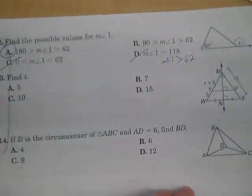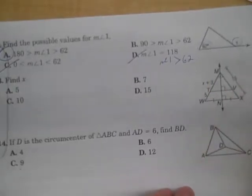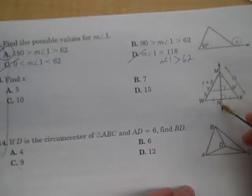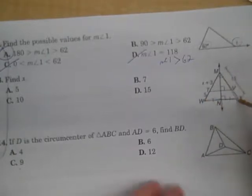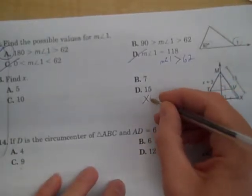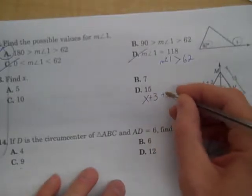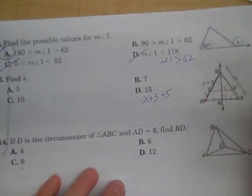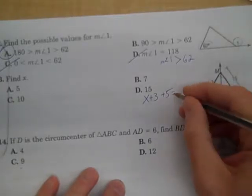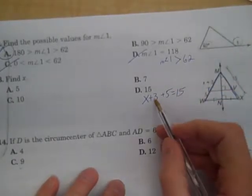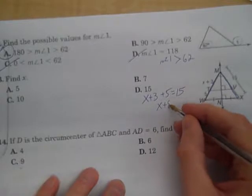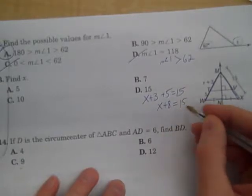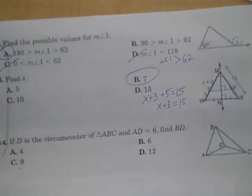Now, number 13, find X. Well, there's X, but I think they want us to do more than that. These are perpendicular. These are the same. That means these are the same. So the equation I'm going to solve is X plus 3 plus 5. That gives me this whole length MW is equal to 15. And that's X plus 8. Now, we could go through and solve. But if I subtract 8, you're going to see that's going to be 7.